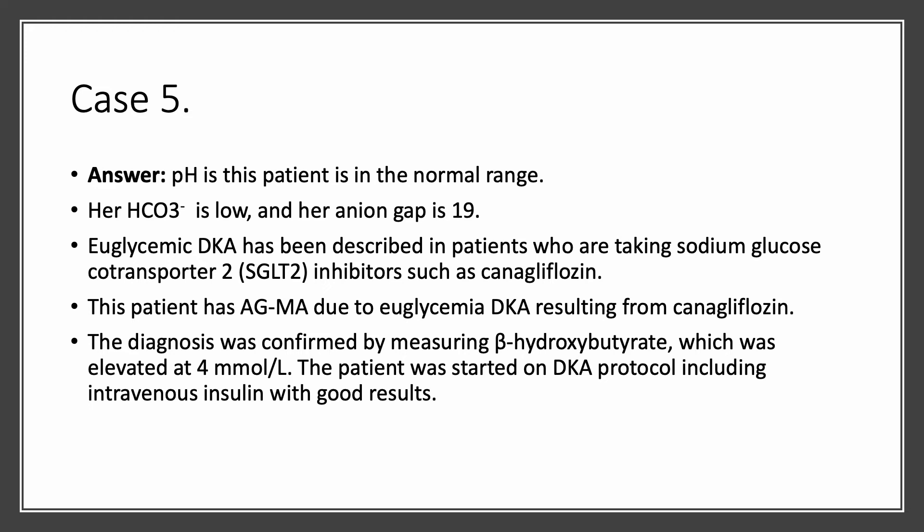The patient did extremely well — you can get them out of it in less than 24 hours. So when in doubt, if you have unexplained anion gap metabolic acidosis, even if the glucose is a little bit high but below 200, check beta-hydroxybutyrate. You will have your answer.